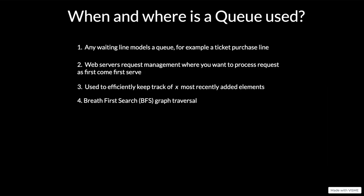The third use case is that a queue is used to efficiently keep track of the X most recently added elements. You give the queue a fixed size, and whenever that size is exceeded you dequeue from the front and add the latest element to the back — giving you a queue of the most recently added elements. The fourth use case, which is also very phenomenal, is that a queue is used in the breadth-first search graph traversal algorithm, which will be covered in a dedicated video.